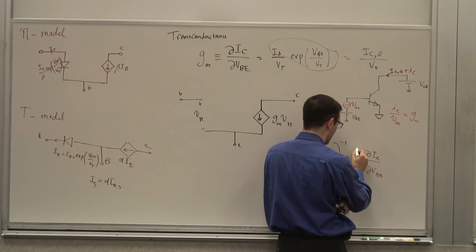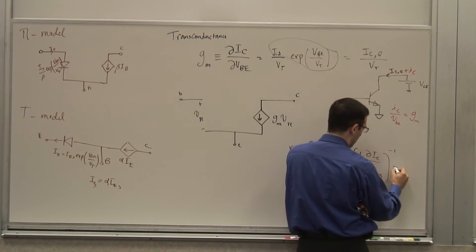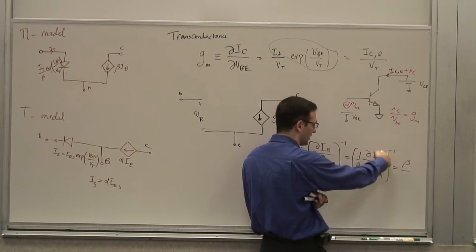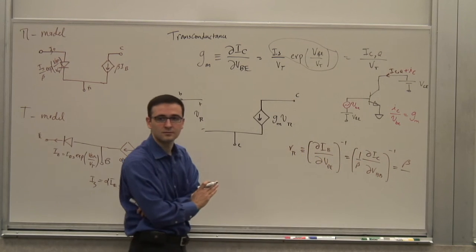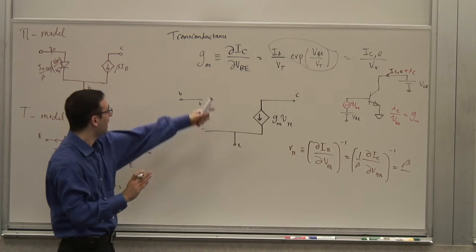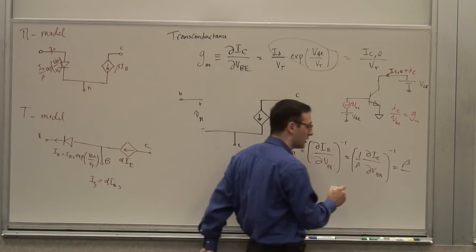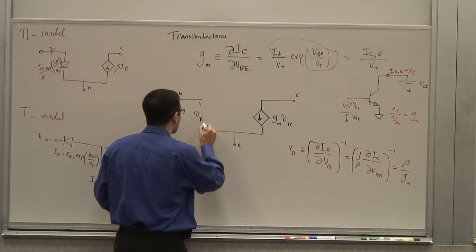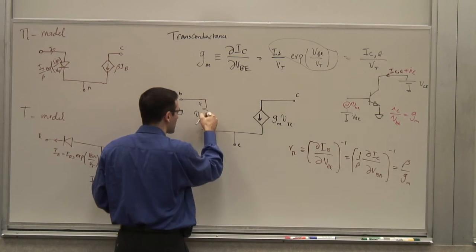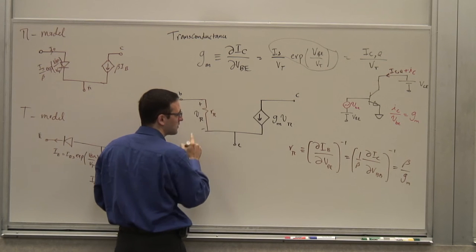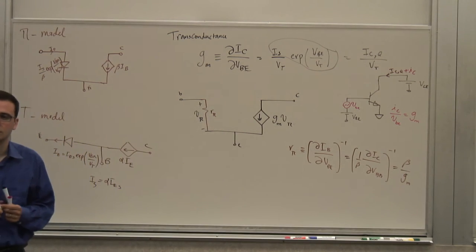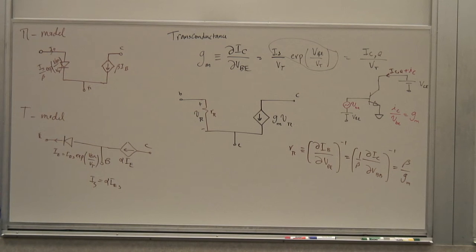If I take the beta out, what's left is dIC/dVBE, which is gm. So the conductance is gm/beta, and therefore Rpi = beta/gm. Or equivalently, Rpi = beta times VT / IC_Q. That's a parasitic component — because ideally Rpi should be infinite. The smaller this resistor is, the more current you have to put into the base, but that current is wasted — it doesn't appear at the collector.